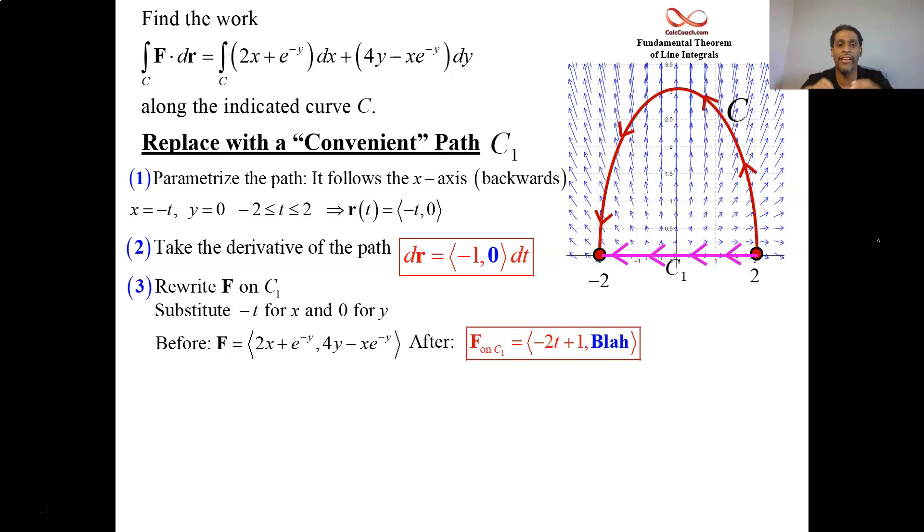But you know what? It doesn't matter. As soon as you see a 0 in dr, whatever's in that second component of f, it doesn't matter because it's going to get dotted with that. It's going to be multiplied by 0. So you can just ignore it. Just put something to hold its place. Blah is what I put.